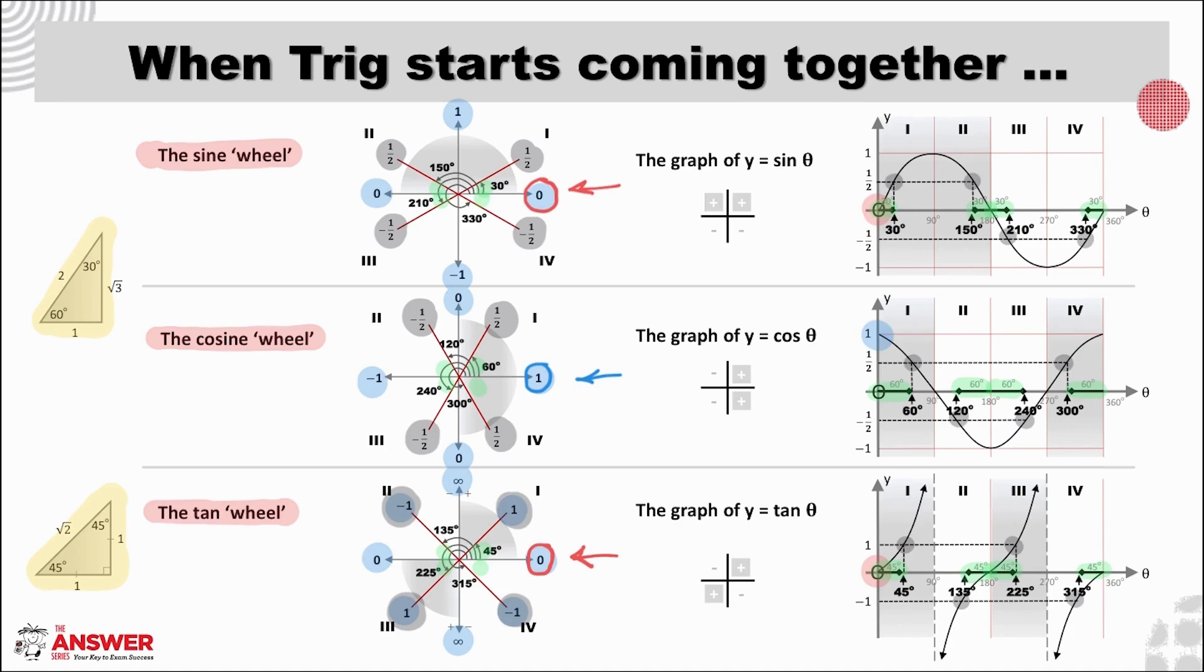Again, here we have shaded in where each ratio is positive. And you can see clearly that they are all positive in the first quad. And so, sin is positive, therefore, in the first and second. Tan is positive in the first and third. And cos is positive in the first and fourth.